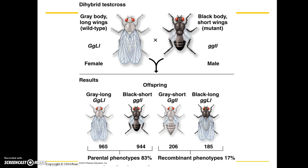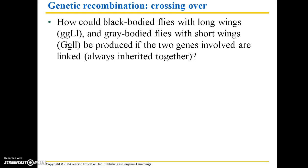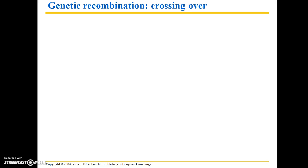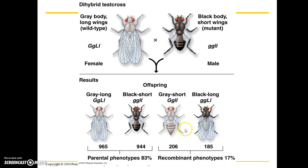Some genes are independently assorted, meaning they can recombine in subsequent generations. You're not necessarily only going to see gray bodies inherited with long wings — you might see gray bodies with short wings, or black-bodied flies with long wings. So how could these recombinant combinations be produced if the two genes are linked? From the results, we can say they're definitely not always inherited together. Most often they are, but sometimes they are not.